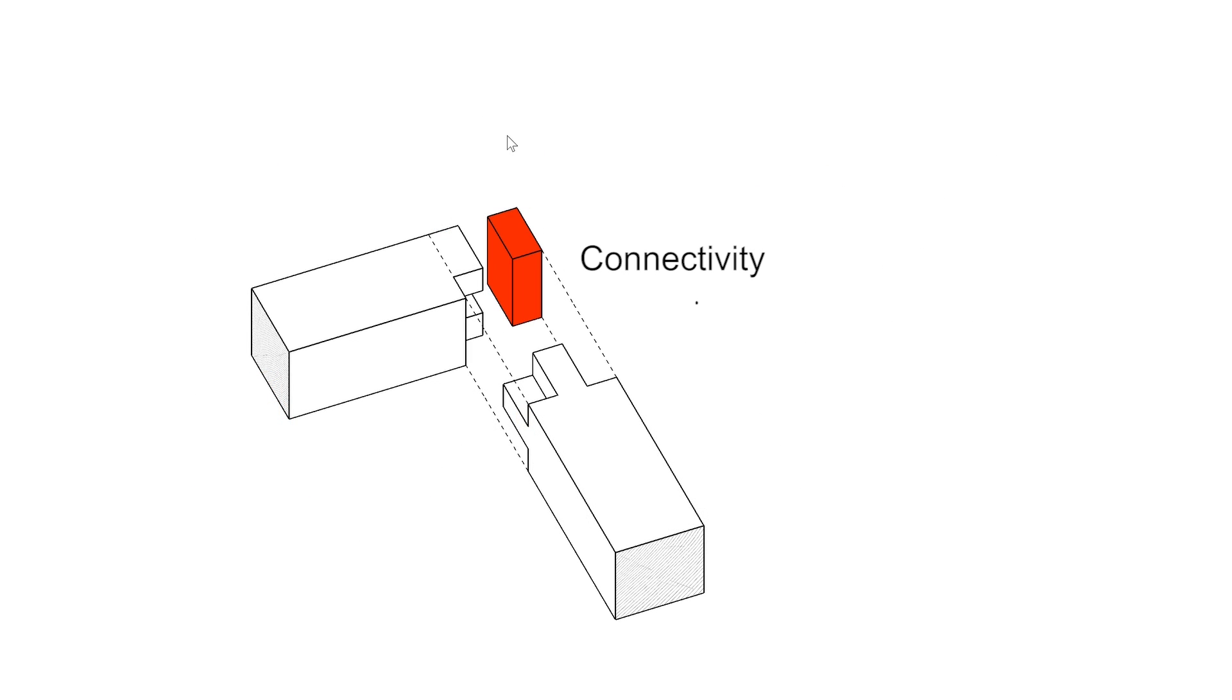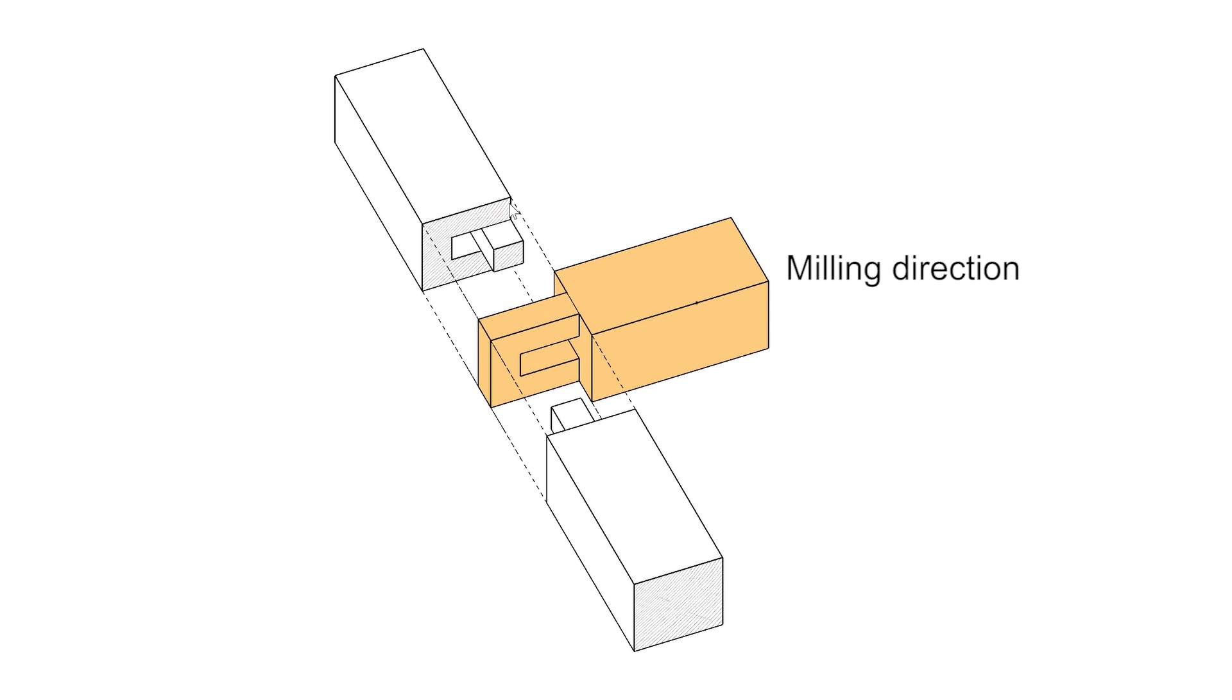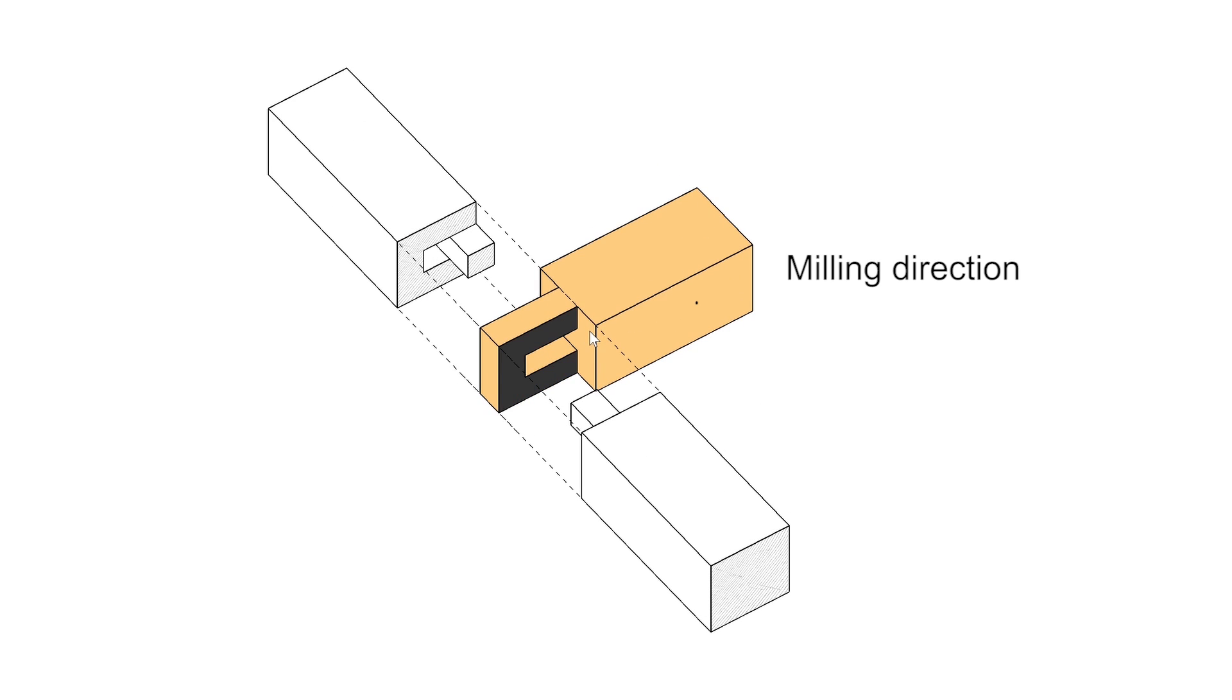Unconnected voxels are shown in red. An unbridged timber is indicated by separate colors. For fabricability, we check so that each timber can be milled out from one direction. If a timber violates this fabrication constraint, the piece is colored orange.